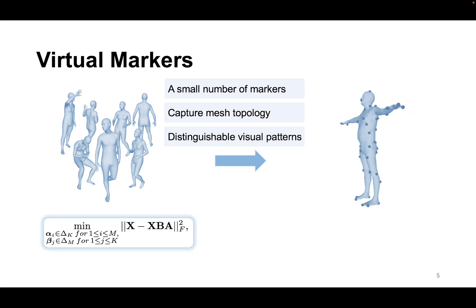To that end, we present a learning algorithm based on archetypal analysis to identify a subset of mesh vertices as the virtual markers that try to satisfy the above requirements to the best extent. Here shows the learned virtual markers which can coarsely outline the body shape and pose.